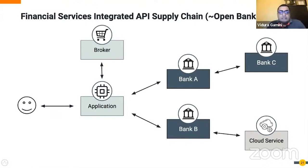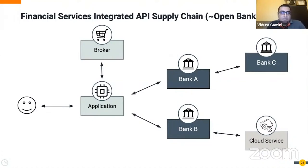That application can use the APIs available at the different banks, and the banks themselves can even use external cloud services to add value — for example, cloud providers offering AI-based credit worthiness checks that analyze applicants based on things like social media profiles. A bank could use such a system from a cloud service provider and use the data obtained through that API to add value to what they provide to the application in turn.